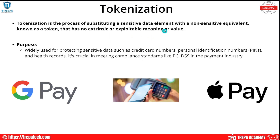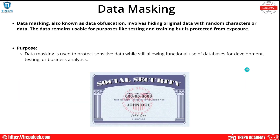The last thing we're going to talk about is tokenization. This is the process of substituting a sensitive data element with a non-sensitive equivalent known as a token that has no exploitable meaning or value. You see this a lot in the payment card industry — Google Pay and Apple Pay use tokenization, where your bank has a token that equals your unique identifier, and that token changes each time you use Apple Pay or Google Pay. This helps keep actual credit card information off your smartphone.